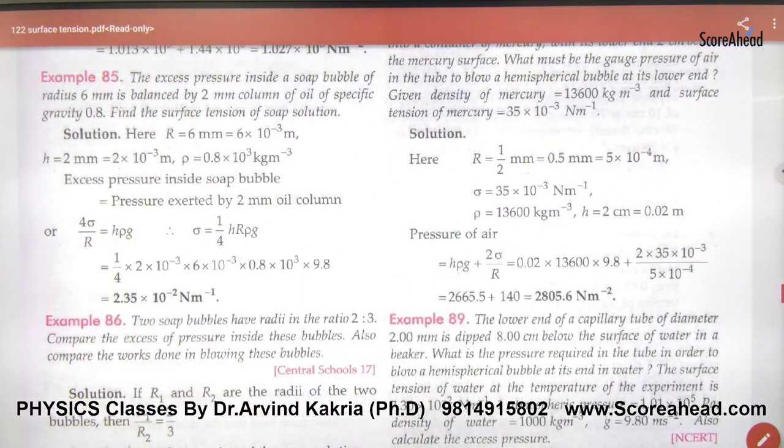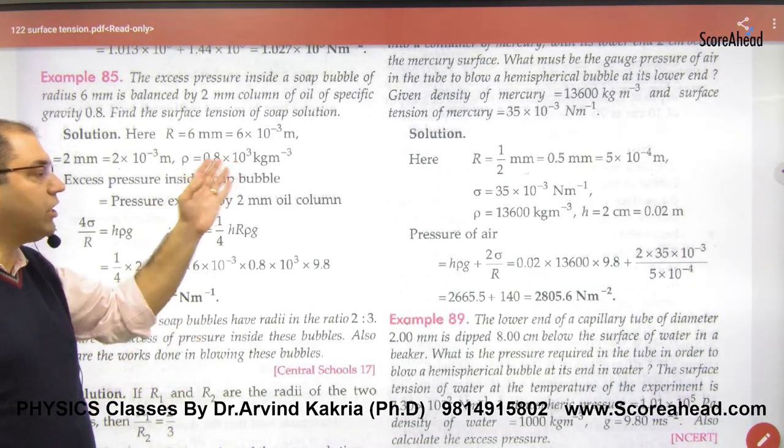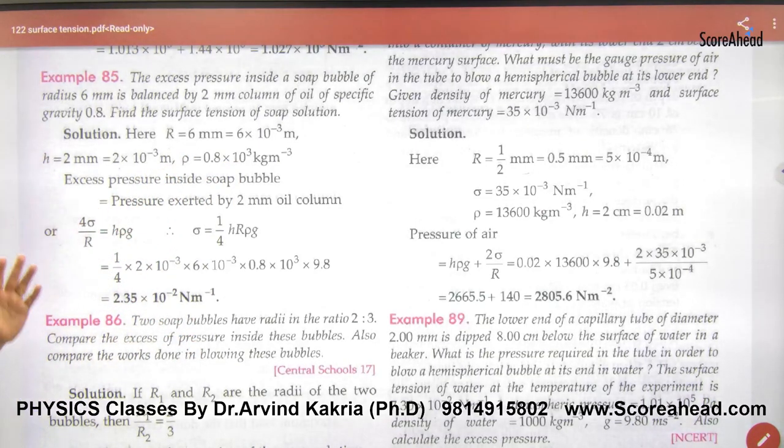Excess pressure inside a soap bubble of radius 6 mm is balanced by 2 mm column of oil of specific gravity 0.8. Specific gravity or relative density. If we multiply the relative density with water density, then the density needs to be the oil. Find surface tension of soap solution.